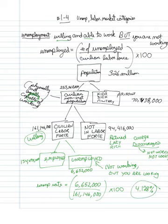And that's going to give me 4.128% essentially. That would be a good general understanding of what my unemployment rate is. So this chart is useful because it helps us understand how all these things are created.